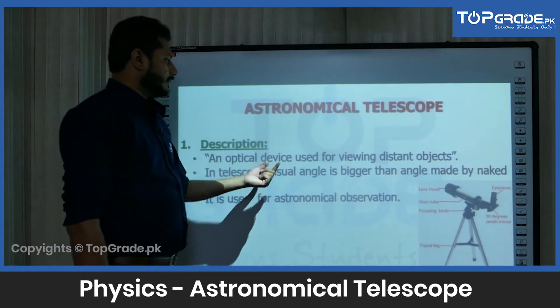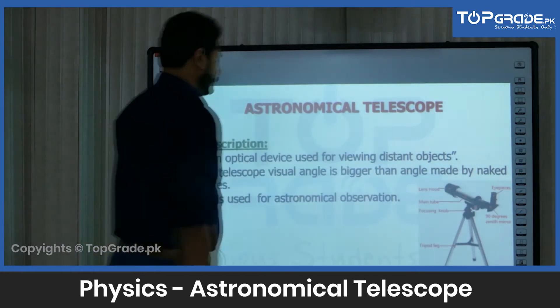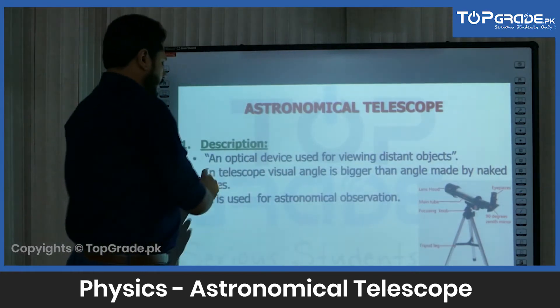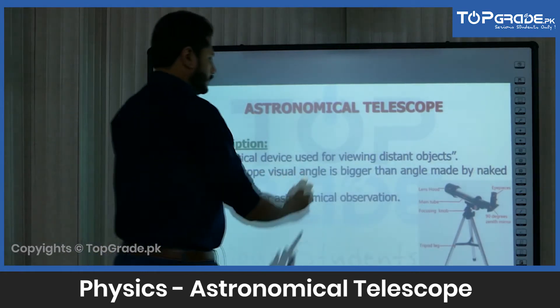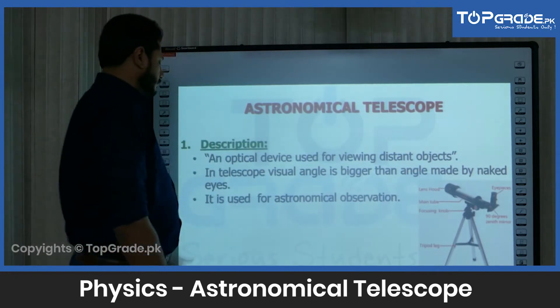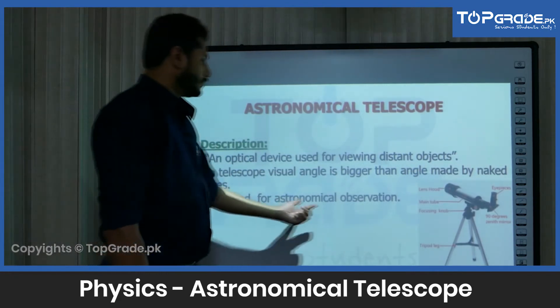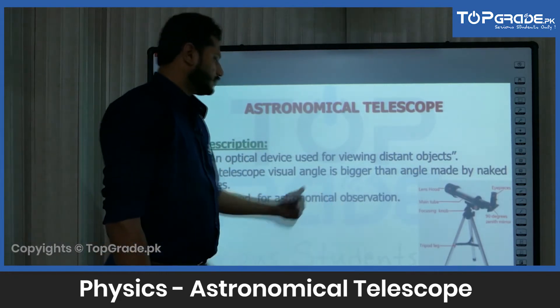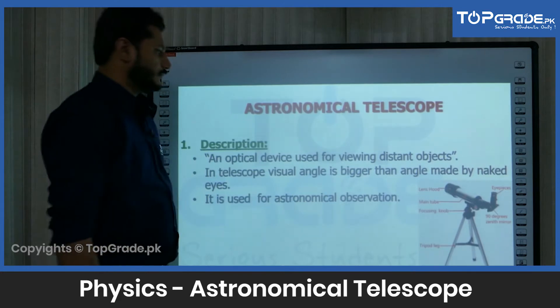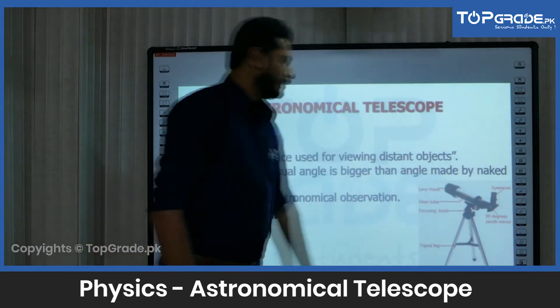A telescope is an optical device used for viewing distant objects. In a telescope, the visual angle is bigger than the angle made by the naked eye. It is used for astronomical observation — this is a practical example.